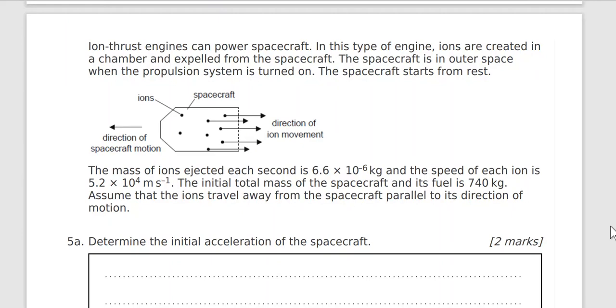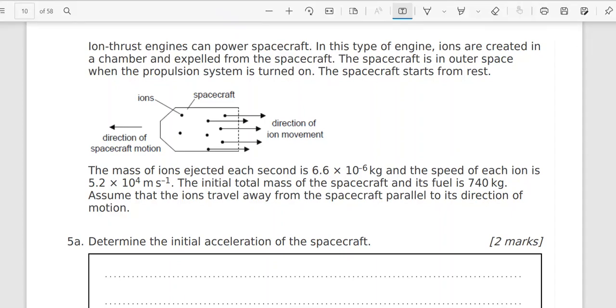Okay, here we have ion thrust engines can power the spacecraft. In this type of engine, ions are created in a chamber and expelled from the spacecraft. The spacecraft is in outer space. When the propulsion system is turned on, the spacecraft starts from rest. So spacecraft, this is the first information, start from rest.